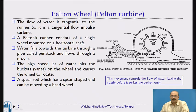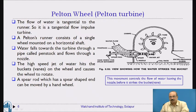Now we understand the exact working procedure of this Pelton turbine. Water flows through the penstock and the spear is adjusted to control the striking of water. Whatever water is available at the head is converted into pressure energy; pressure energy is converted into velocity energy — kinetic energy — which hits the blade. When it hits the blade, it pushes the blade, and immediately the next blade comes, so the water hits again and pushes it. This way, continuous motion takes place on the blades and rotation starts.